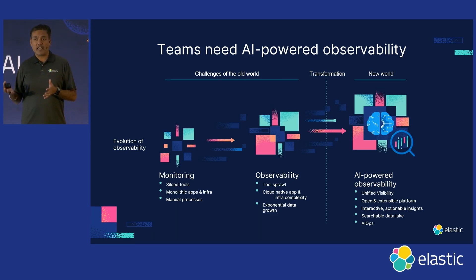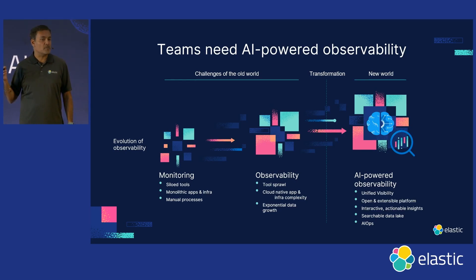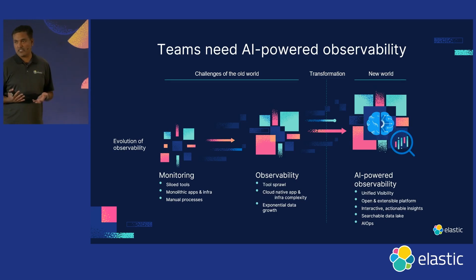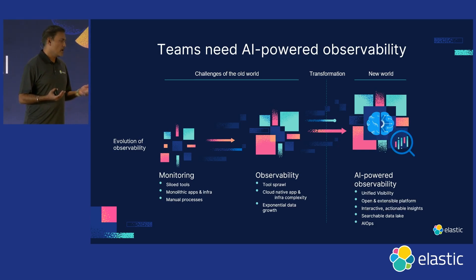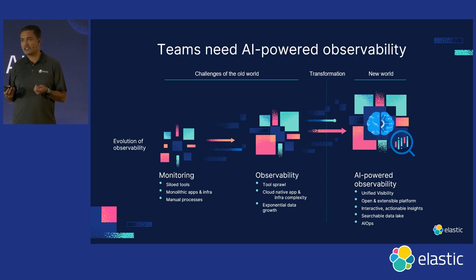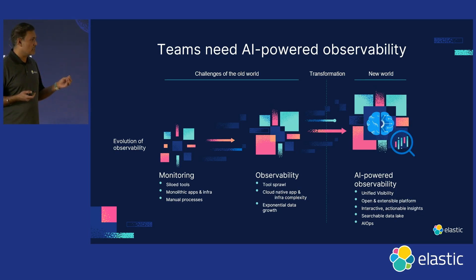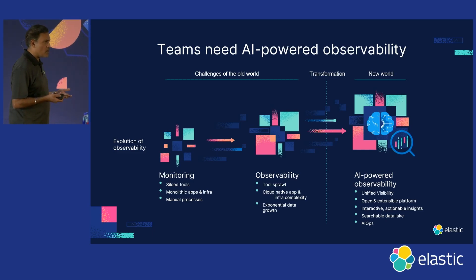But we feel that today we are at another inflection point for observability. Ken talked a little bit about the detection, the diagnosis, and the remediation, and how it's all going to be more and more towards the auto — the auto detection, the auto diagnosis, and the auto remediation. And we feel that it's about AI-powered observability. That's the transformation we are seeing in the market. What that takes is the ability to get all the data, to process that data effectively, unify that, and be able to apply AI to it. You've heard about AI Ops and things of that sort.